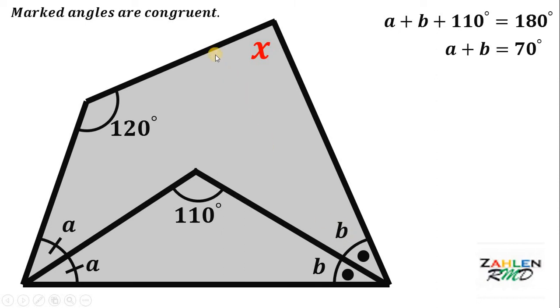Now, let's consider the sum of all angles inside of this quadrilateral. If we add all interior angles of this quadrilateral, we get a total of 360 degrees. Therefore, we have 2a plus 2b plus angle x plus 120 and it will give us 360.